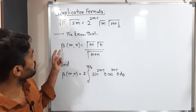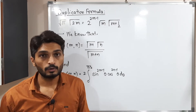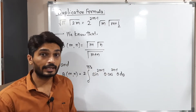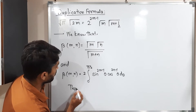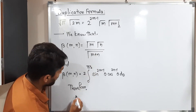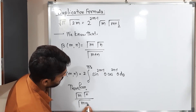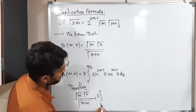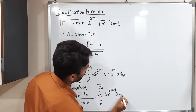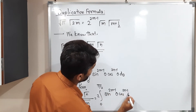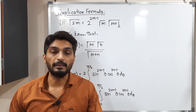Notice that the left-hand side of both equations is beta(m,n) — both are the same. So we can equate the right-hand sides: gamma(m) gamma(n) / gamma(m+n) = 2 ∫₀^(π/2) sin^(2m−1)(θ) cos^(2n−1)(θ) dθ. We simply used two properties of beta function.